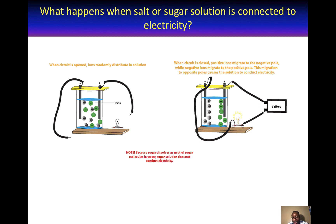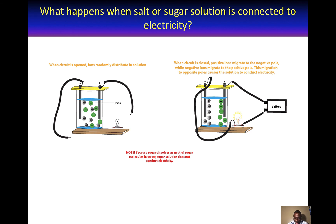But if you replace the plus and minus ions in solution with sugar molecules, you notice that sugar molecules, because they do not have these charges, cannot migrate to opposite ends of the poles. As a result, they would not be able to conduct electricity. Because sugar solution dissolves as neutral molecules, those neutral molecules are not charge carriers, so they would not be able to carry electricity in solution. But salt solution dissolves as ions, so these ions carry electricity throughout the whole solution — which is why salt solution conducts electricity but sugar solution does not.